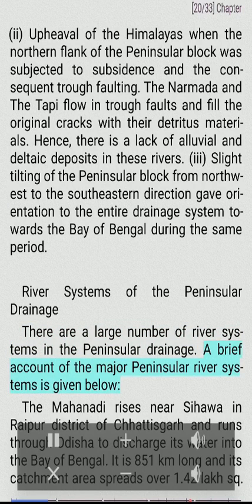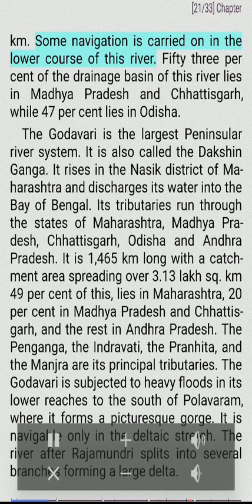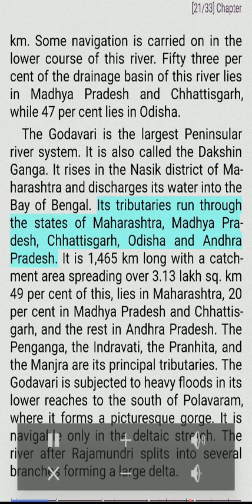The Mahanadi rises near Sihawa in Raipur district of Chhattisgarh and runs through Odisha to discharge into the Bay of Bengal. It is 851 km long with a catchment area of 1.42 lakh sq km. The Godavari is the largest peninsular river system, also called the Dakshin Ganga. It rises in Nasik district of Maharashtra and discharges into the Bay of Bengal. It is 1,465 km long with a catchment area of 3.13 lakh sq km. Its principal tributaries are the Penganga, the Indravati, the Pranhita, and the Mandra.